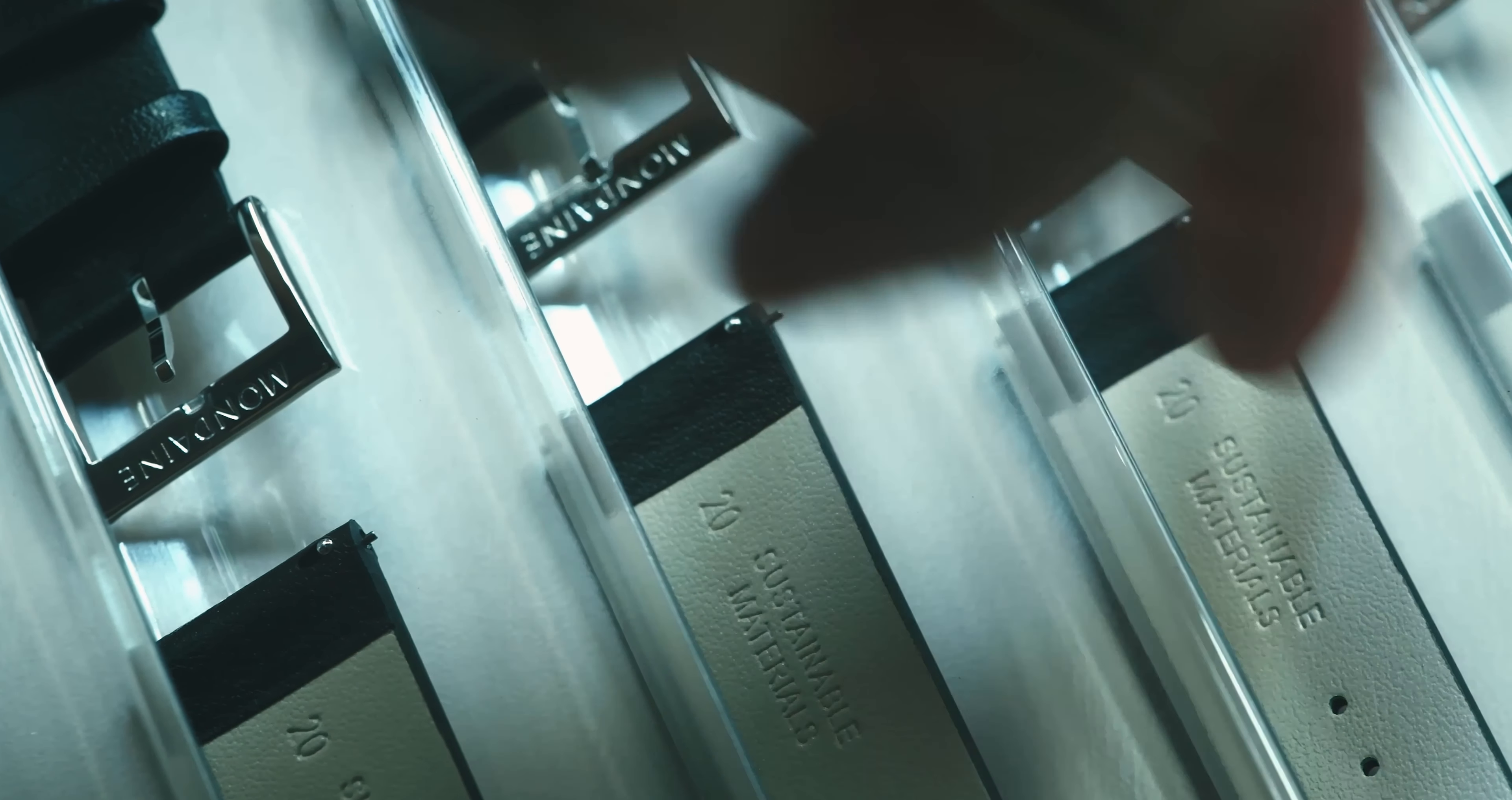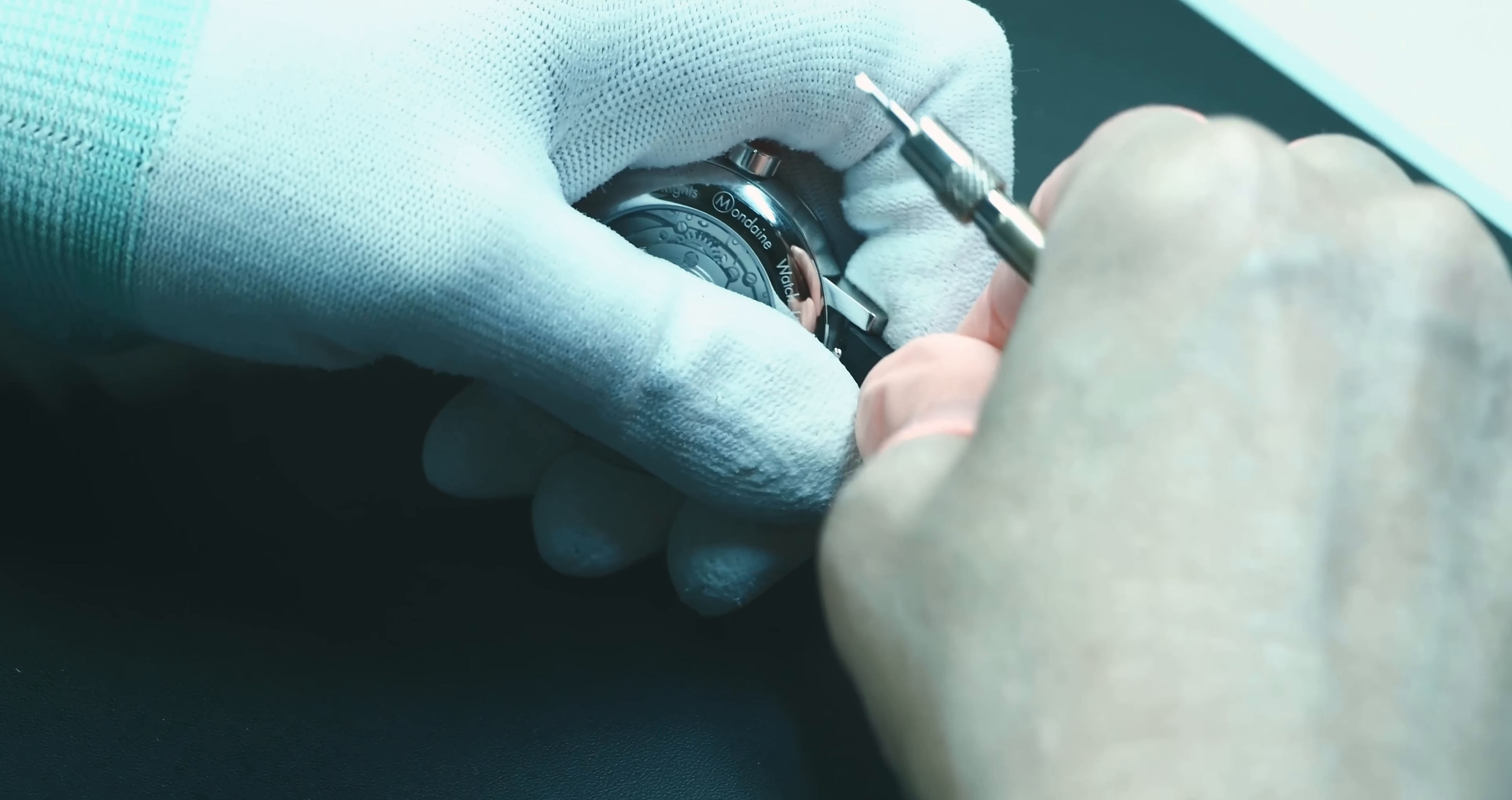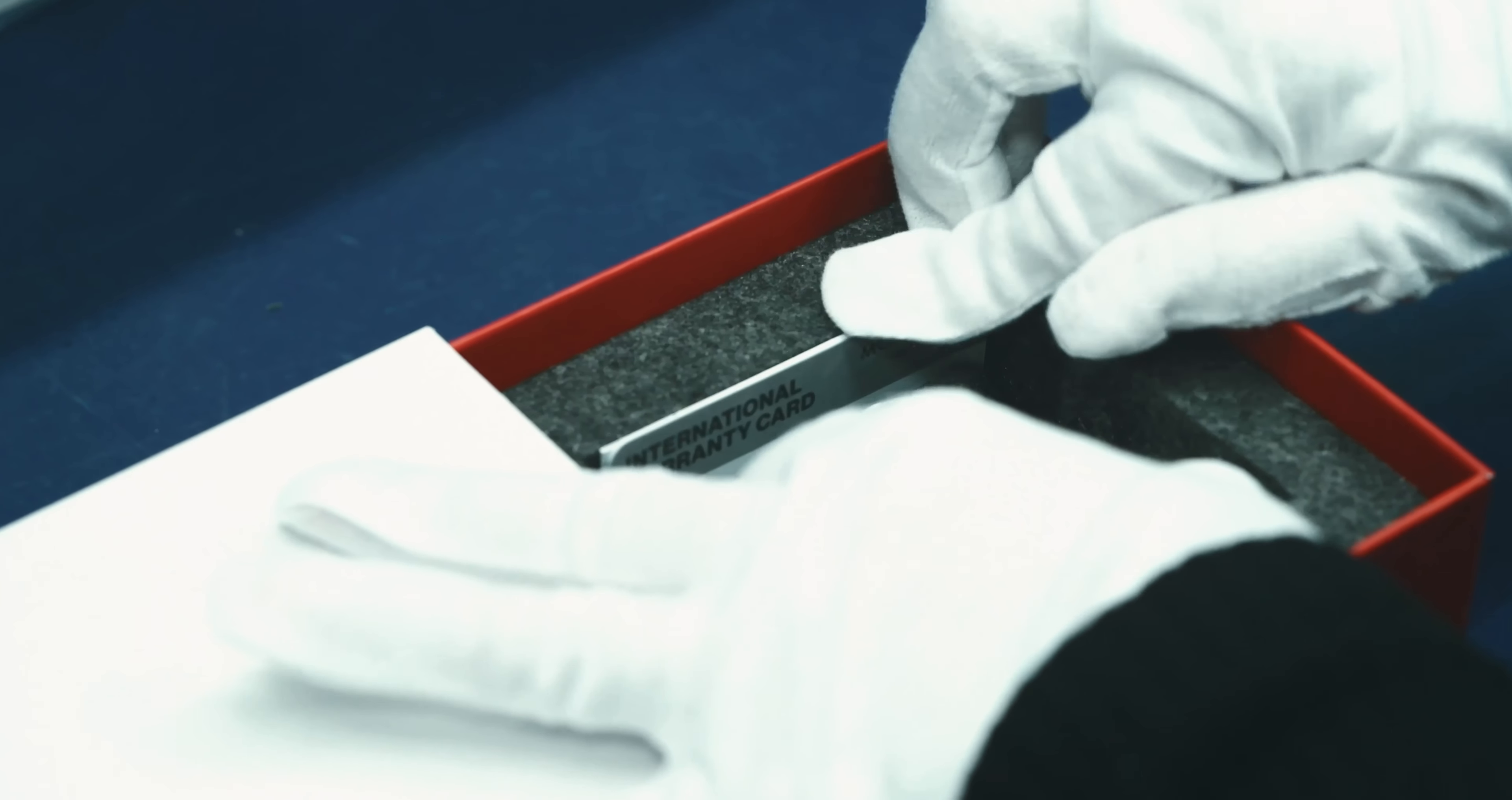Our factory grows up to 80% of its energy from the sun. Mondaine is one of the world's first CO2 neutral brands and companies due to its efforts over the past decades.